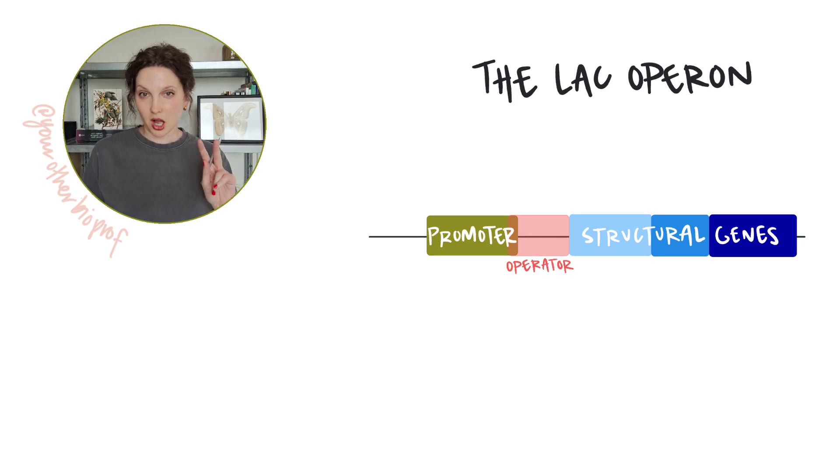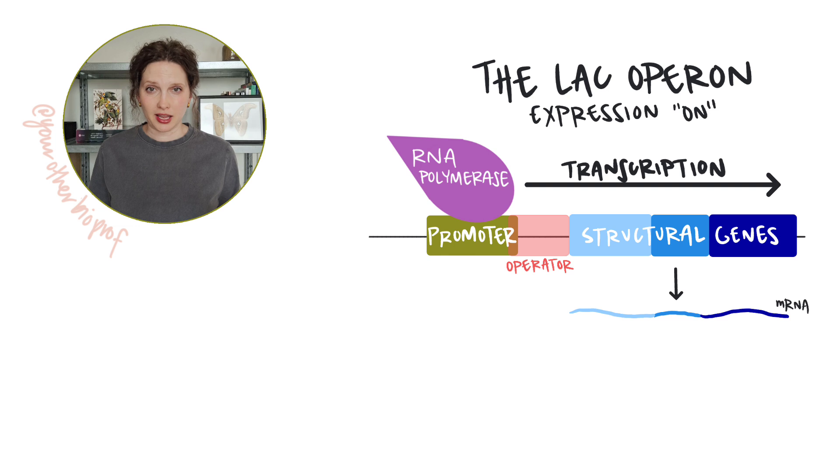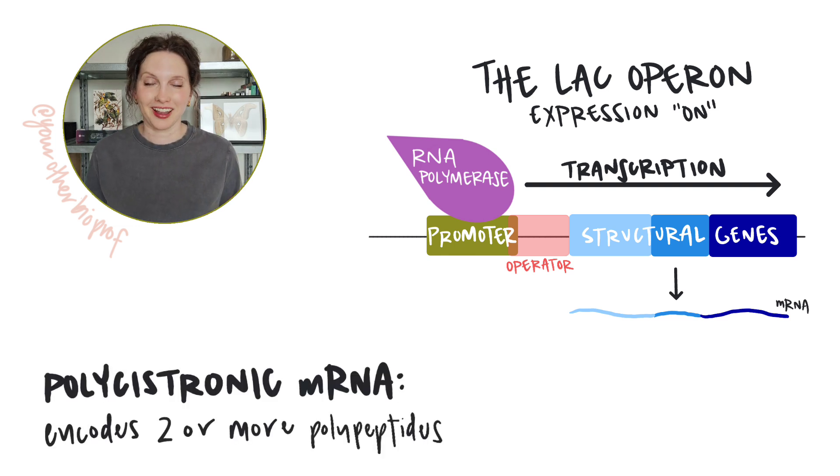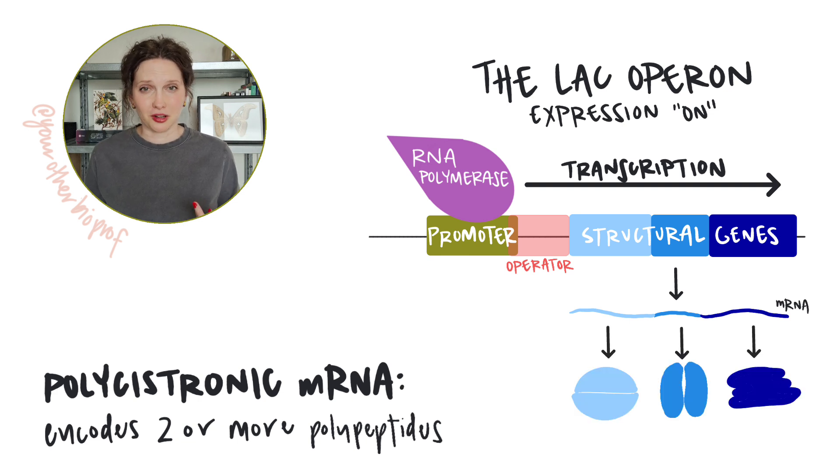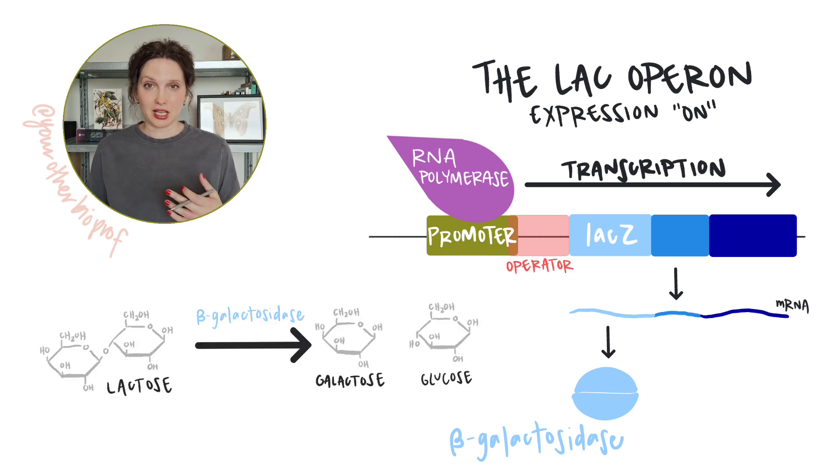When the lac operon is on or expressed, the structural genes are transcribed to produce a single mRNA, or polycistronic mRNA, that will be translated to produce three enzymes involved in metabolizing the sugar lactose. So starting with the closest to the promoter, lac Z encodes beta-galactosidase, an enzyme involved in breaking lactose, a disaccharide, into two monosaccharides. And it also does something else we'll see a bit later.